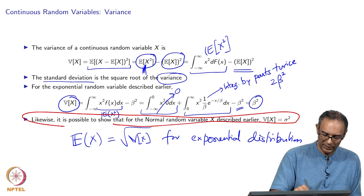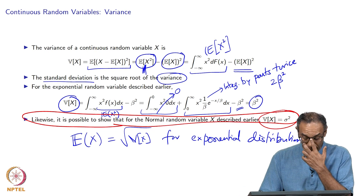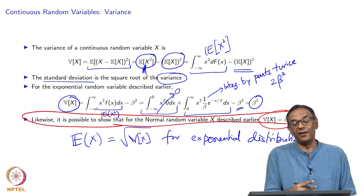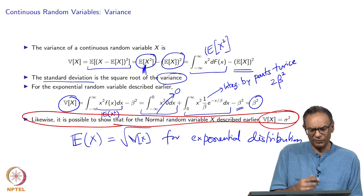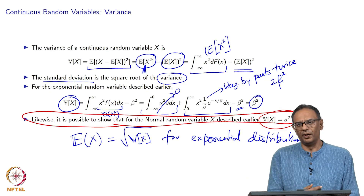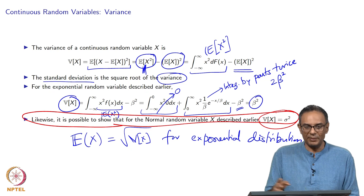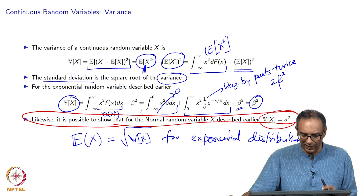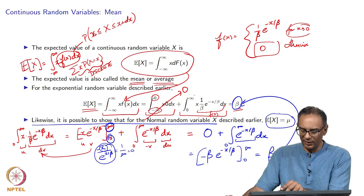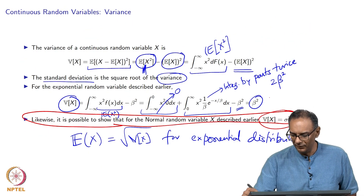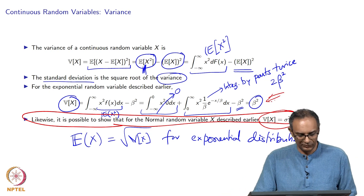All these results are also available online — you could look at Khan Academy or several other sites. If you are not able to derive the expected value or variance for the normal distribution, please check one of those websites; they will do a great job.